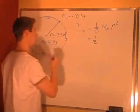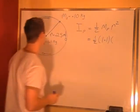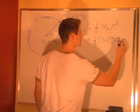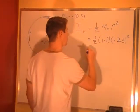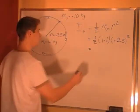So we plug in the mass of the platter of 1.1 and the radius of 0.25 meters squared. That gives us the moment of inertia of the platter.